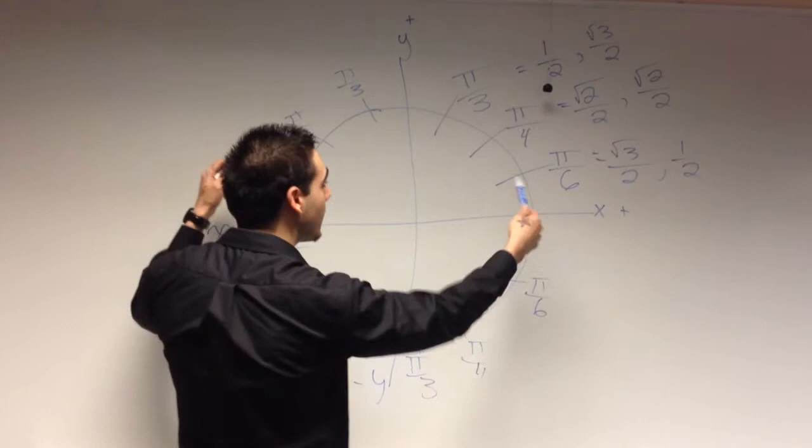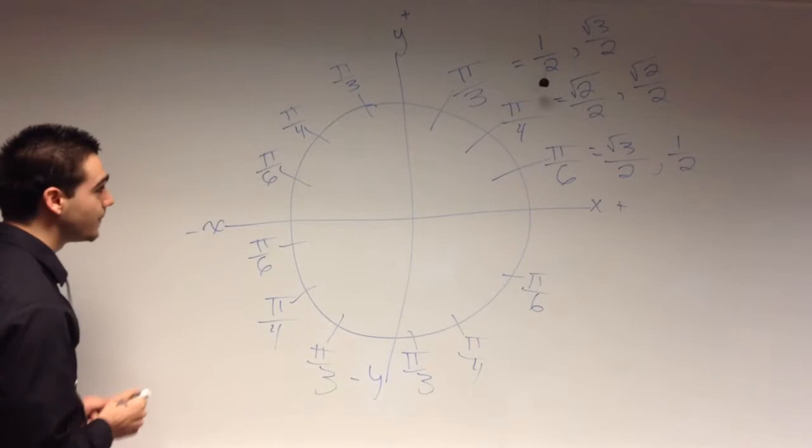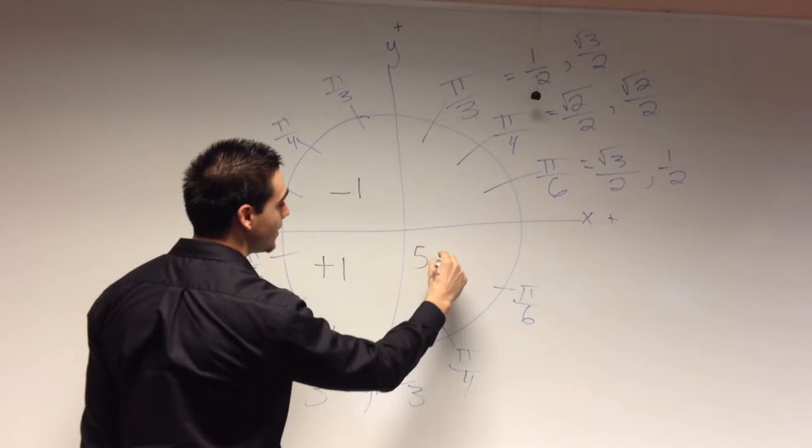Now here comes the fun part. Once you have this all written out, this one's going to be minus 1, this one's going to be plus 1, and this one's going to be 7, 11, 5π. All you've got to do is put the numbers in order. So 7, 11, 5π, right.